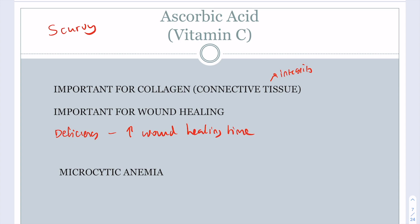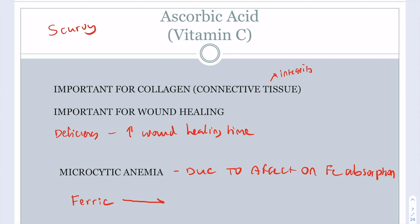Vitamin C deficiency is associated with microcytic anemia, meaning red blood cells are too small. This is not directly related to vitamin C's effect on blood cells, but is due to its effect on iron absorption. Iron is typically eaten in the ferric state but must be absorbed as ferrous. Vitamin C helps convert ferric iron to ferrous so it can be absorbed. Without enough iron, you will develop microcytic anemia.